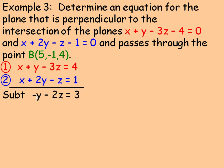y take away 2y is negative y, negative 3z minus negative z is the same as negative 3z plus z, so that is negative 2z, and 4 minus 1 is 3.